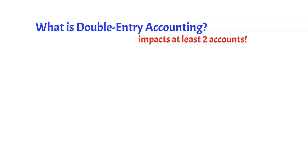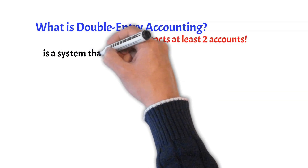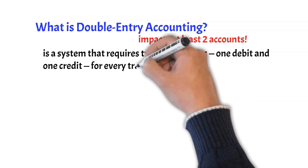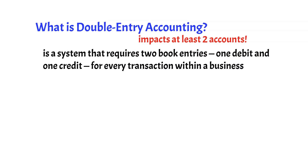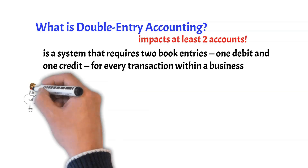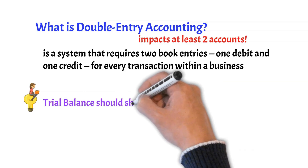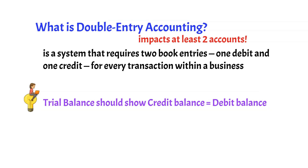Double-entry accounting is a system that requires two book entries — one debit and one credit — for every transaction within a business. All these entries get summarized in a trial balance, which shows the account balances and the totals of your total credits and total debits. If done correctly, your trial balance should show that the credit balance is the same as the debit balance. This method keeps a company's accounts balanced, showing a true financial picture of the company's finances.